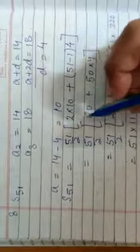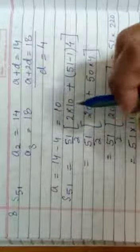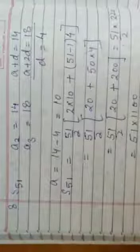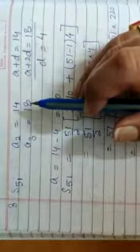Good morning students. Today I am discussing question number 8 to 11 of exercise 5.3. Question number 8 states that you have to find S51, the sum of first 51 terms of the AP, whose second and third term are 14 and 18.